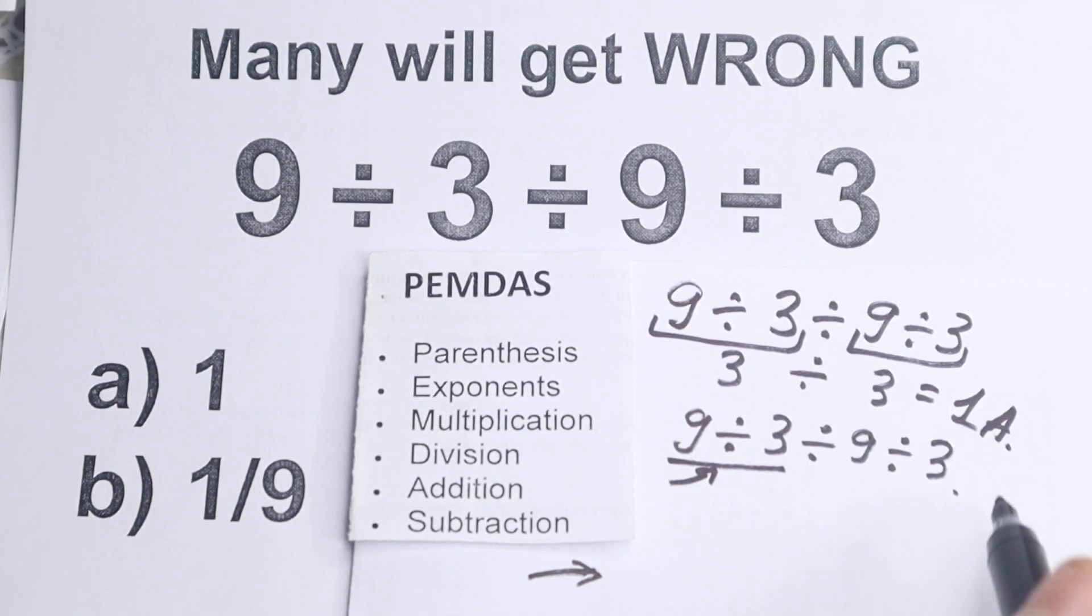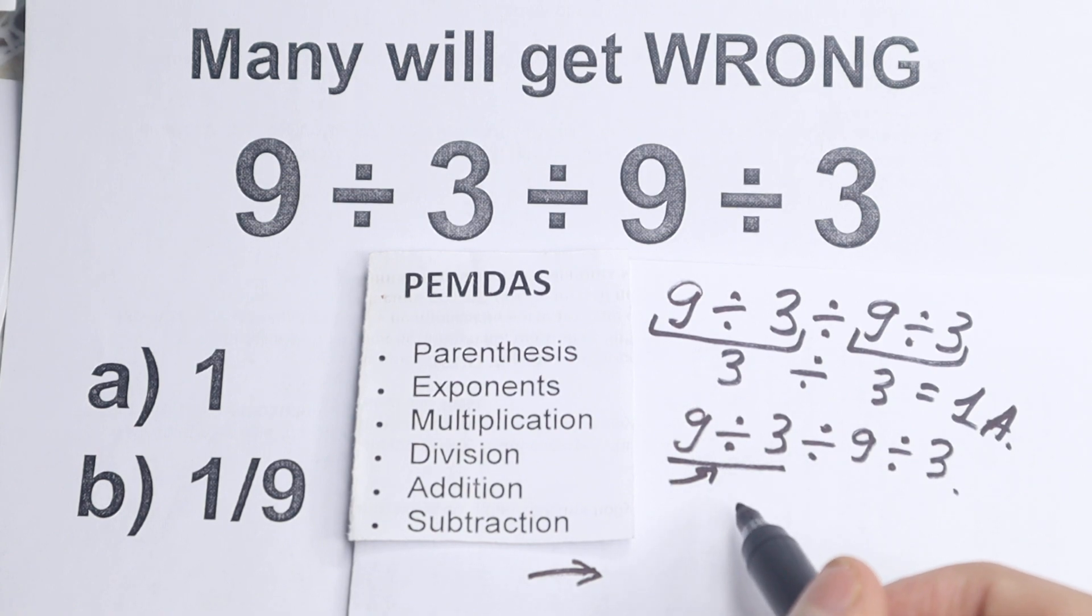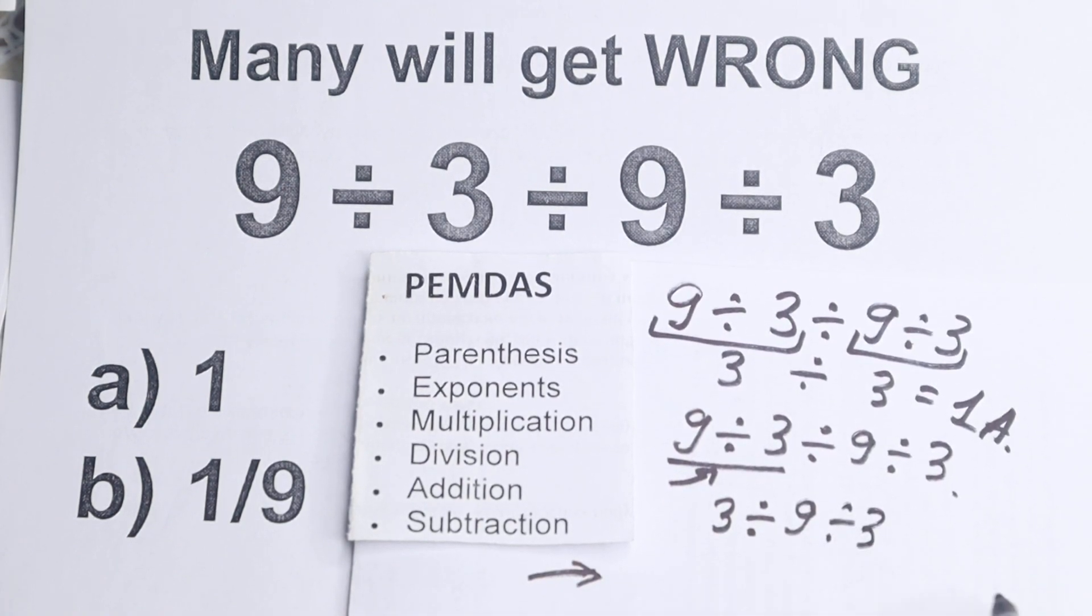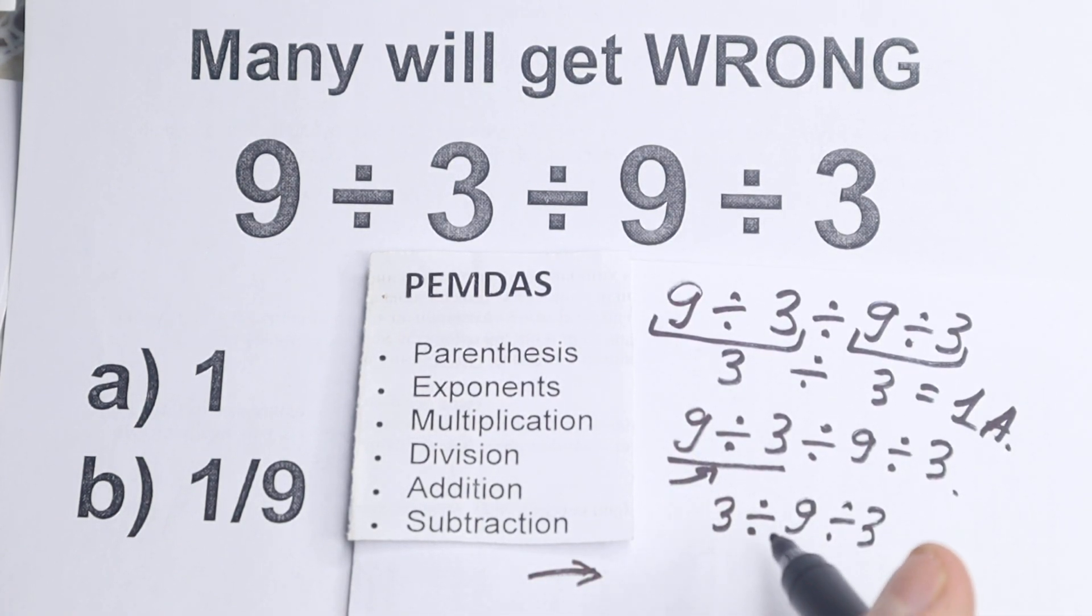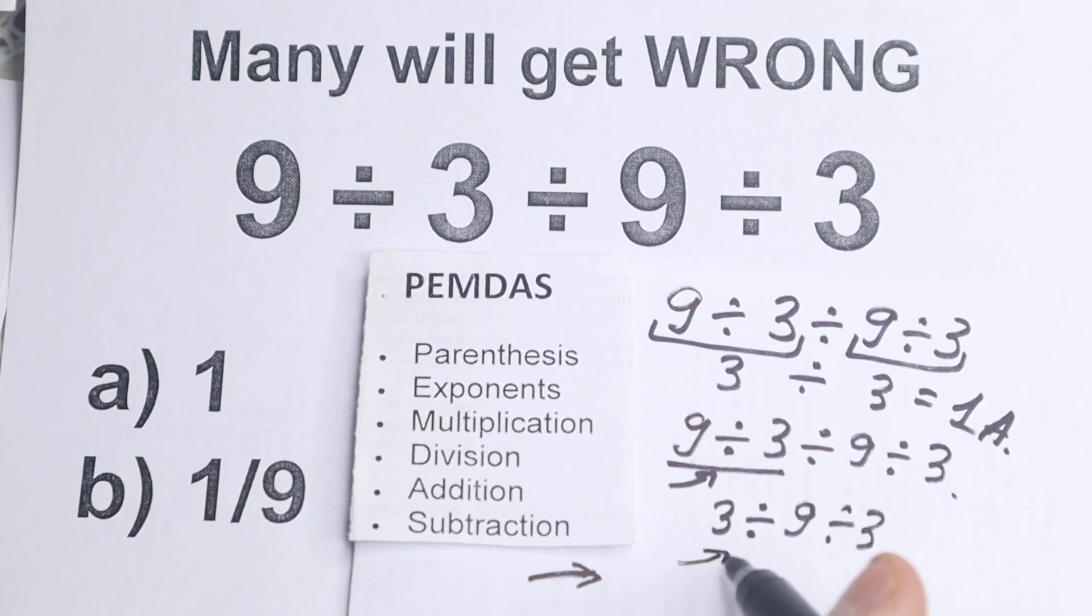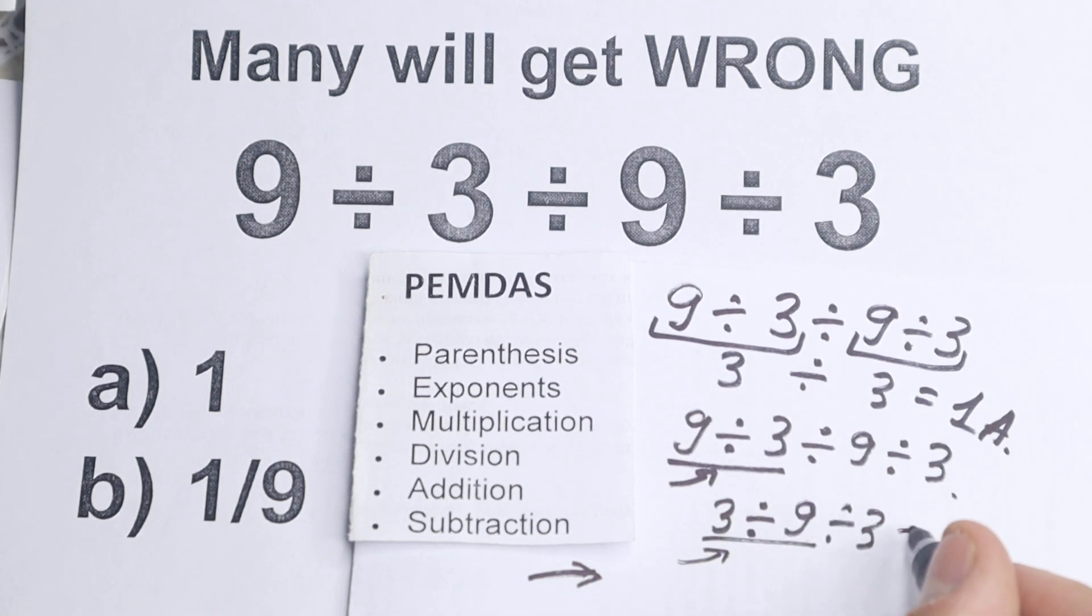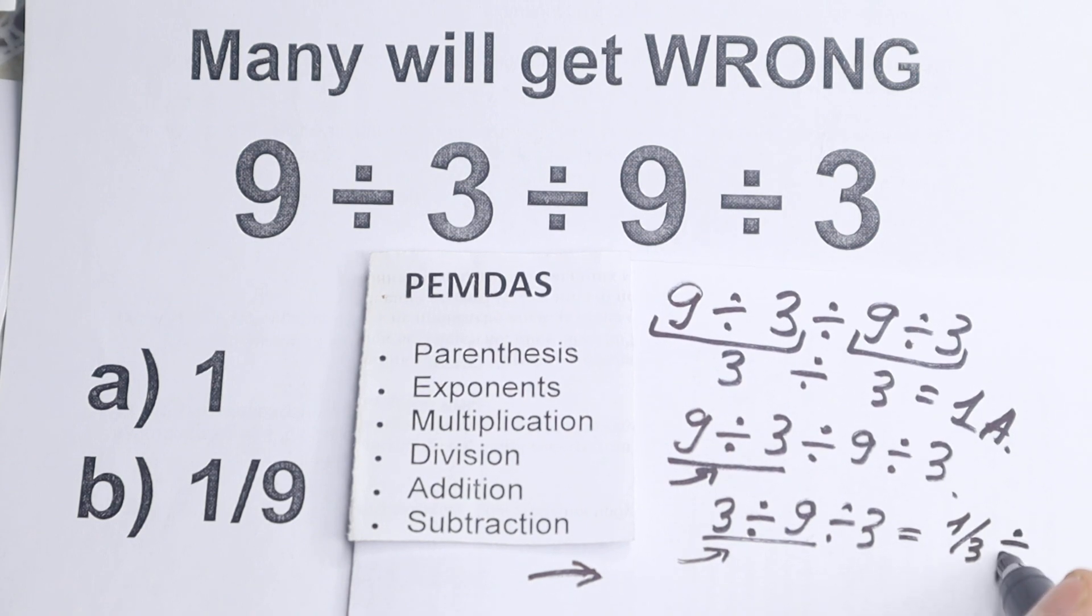So we need to divide the first two numbers. 9 divided by 3 equal to 3. And we still have this in the end: 3 divided by 9 divided by 3. How can we solve it? Let's scan once more. What is the first sign from left to right? The first sign from left to right is this division. So let's divide. 3 divided by 9 equal to 1 over 3, or 1 third. And we still have one division sign: 1 third divided by 3, which is equal to 1 over 9.